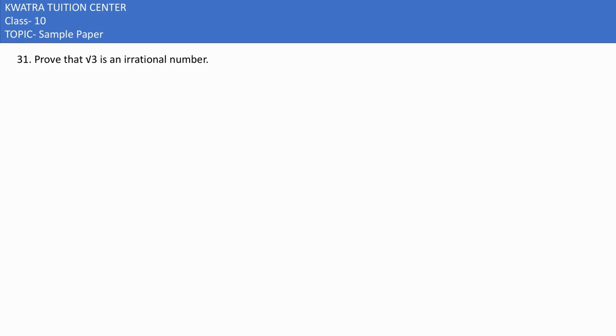Here in this case, we need to prove that √3 is an irrational number. What should we do in this situation?